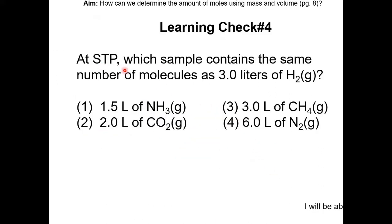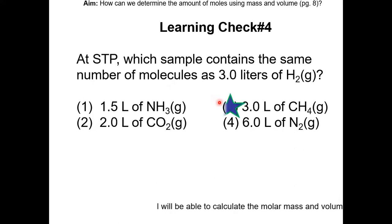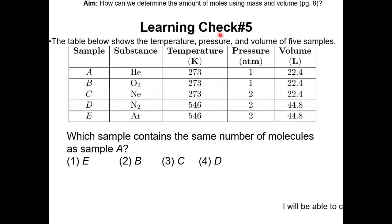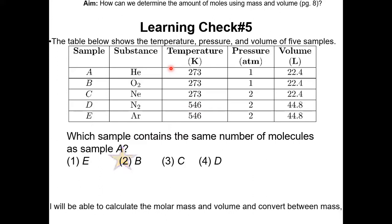Learning check number 4: at STP, which sample contains the same number of molecules as 3 liters of H2 gas? Pause the video and resume once completed. Since we are assuming ideal gas under STP conditions, the same number of molecules will occupy the same space. The answer is choice 3: 3 liters of CH4 will have the same number of molecules as 3 liters of H2. Learning check number 5: which sample contains the same number of molecules as sample A? We need the same conditions and same volume — that would be sample B, choice 2.